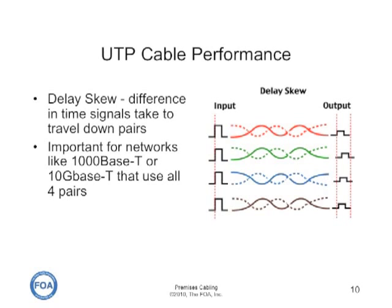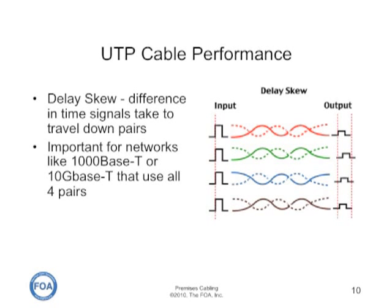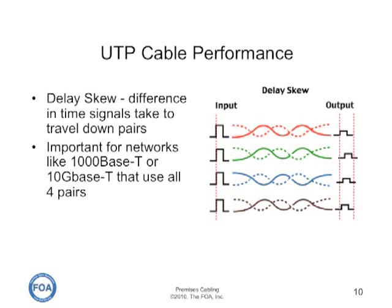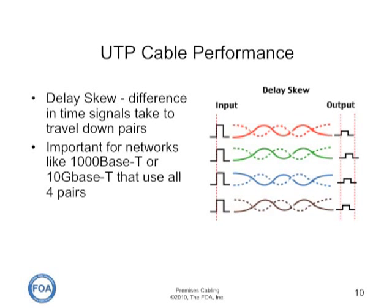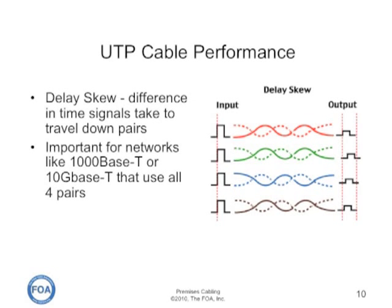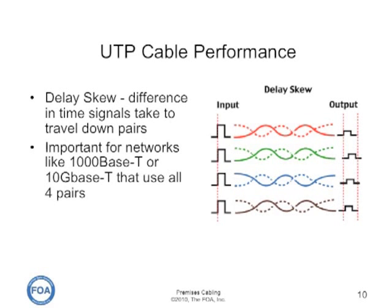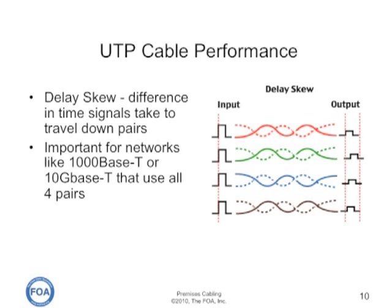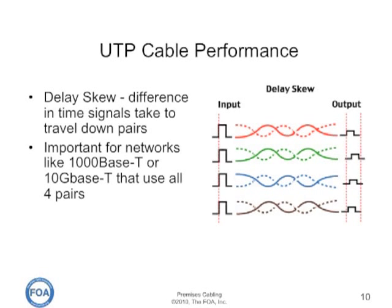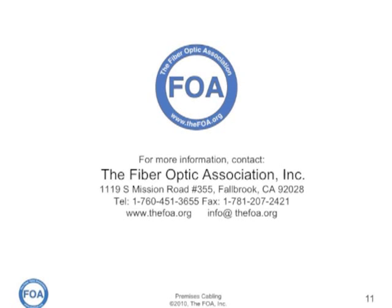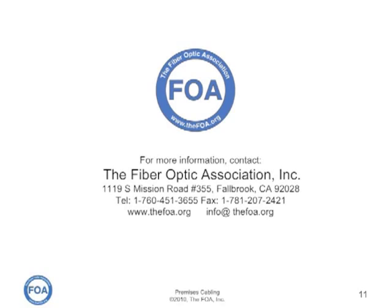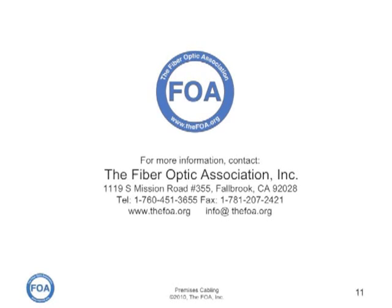Delay skew is an important test for cables used for transmitting gigabit Ethernet or faster. These systems use all four pairs, transmitting a fourth of the data on each pair, so it's important that they arrive within a specific time frame so they can be reassembled into one signal. The reason the time period may differ is that the different pairs have different twist rates, and a pair with more twist actually has more length of copper. This is another test that certifying testers always test for. More information on testing UTP cables can be found on the FOA website at www.thefoa.org.